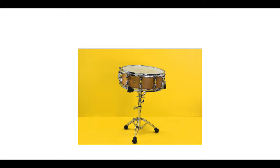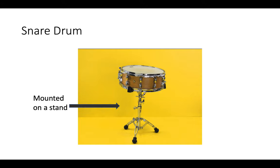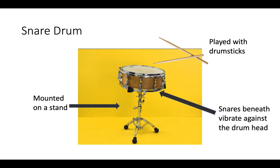Which instrument are we looking at here? It's another part of the standard drum kit. That's right — it's the snare drum. A few features of the snare drum: this one is mounted on a stand, a metal stand, which lifts it up off the floor. It's played with drumsticks, and when you hit the skin on the top, it vibrates the snares — the springs that are underneath — and they vibrate against the drum head and create that cracking sound that is so distinctive.